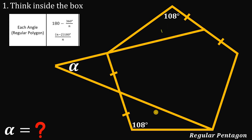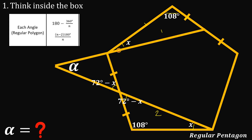Notice these two triangles are congruent using the Side-Angle-Side (SAS) postulate. So if we call one base angle x, the other is also x. The sum of angles inside a triangle adds up to 180°, so the top angle of the triangle is 72° − x. Vertical angles are congruent, so the opposite angle is also 72° − x. We know the full pentagon angle is 108°, so the remaining angle is 108° − x.